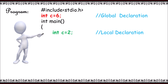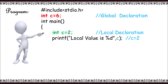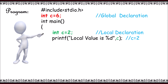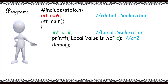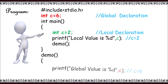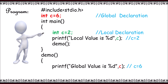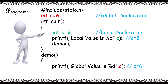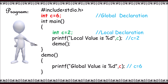If we print the value of c, it prints c = 2 because it gives more preference to the local variable than the global variable. On considering another function, demo, if I want to print the value of c in demo, it prints c = 6. Hence, the local variable is not available in this particular function, so it prefers to print the value from the global declaration.